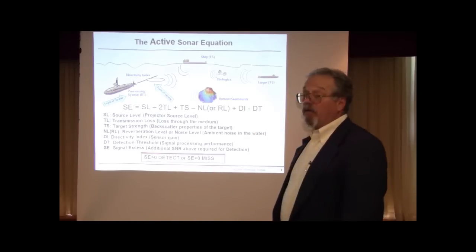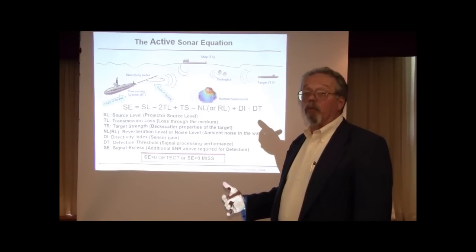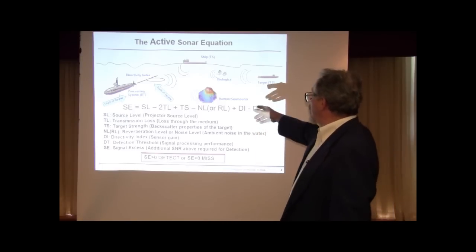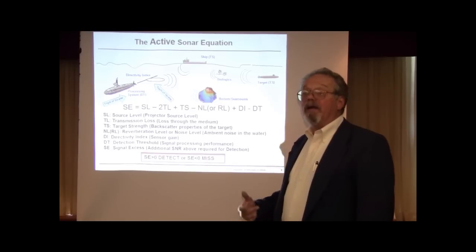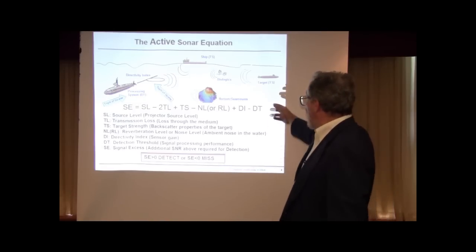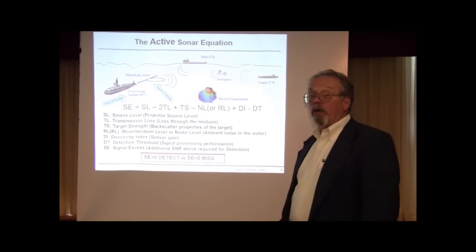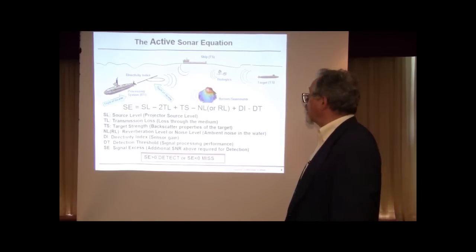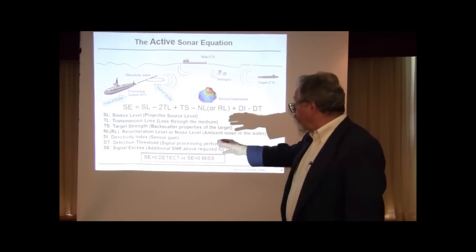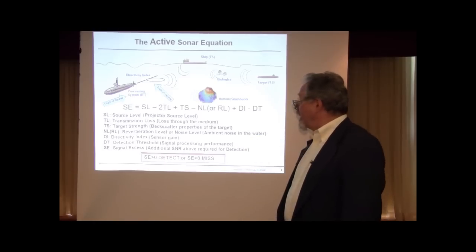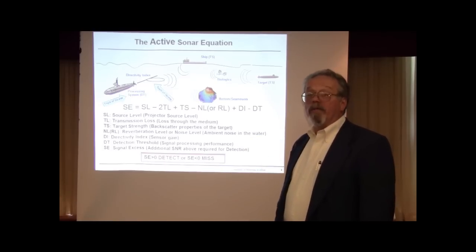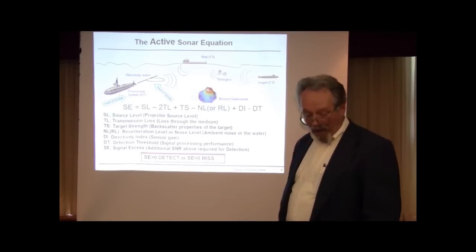Minus noise level, or in active sonar you also have reverberation, plus a directivity index or array gain of how the array helps enhance the signal-to-noise ratio and discriminate against both noise and reverberation. And then that signal-to-noise ratio is compared to the required signal-to-noise ratio or the detection threshold. Normally we say when the signal excess is positive, you make a detection, and when the signal excess is negative, less than zero, you don't have enough signal-to-noise ratio to make good solid detections.